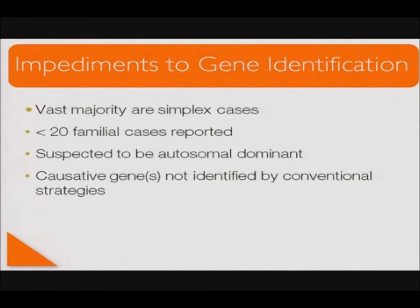What were the major impediments to gene identification? The vast majority of cases of Kabuki syndrome are simplex cases — there are fewer than 20 familial cases in the literature. We can glean from those cases that Kabuki might be an autosomal dominant disorder with a high frequency of de novo mutational events, and the causative gene or genes had not been identified by our conventional strategies.